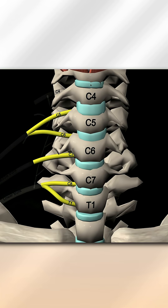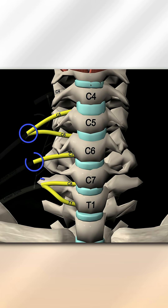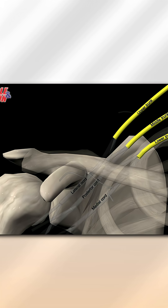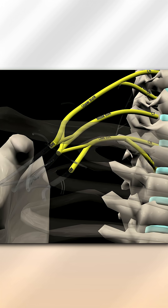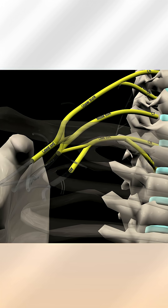These roots, C5 to T1, form the trunks: upper, middle, lower. Each trunk divides into anterior and posterior divisions. They regroup again as cords: lateral, posterior, and medial.